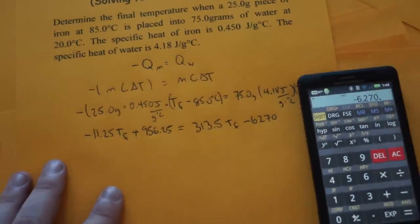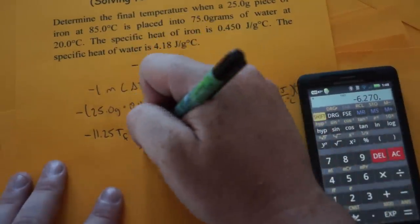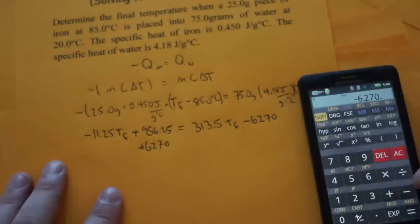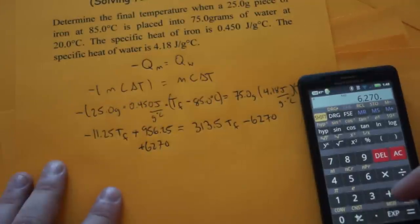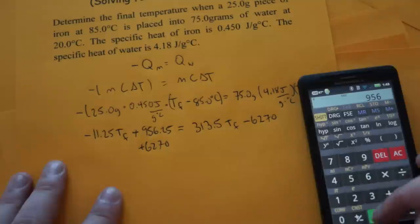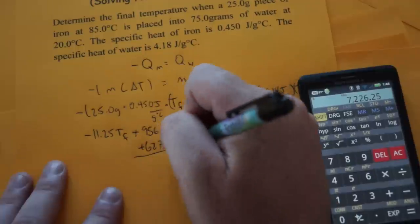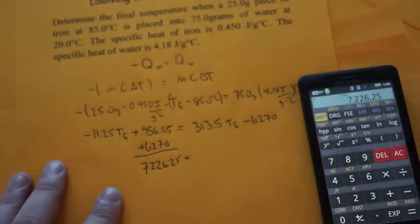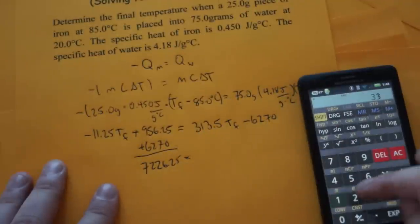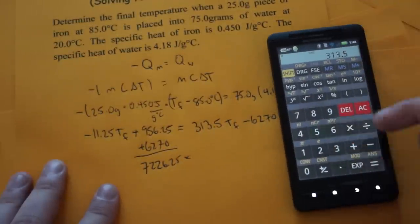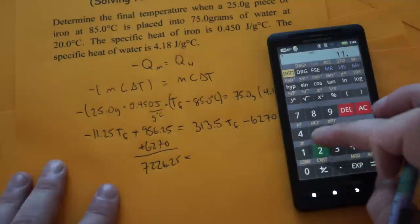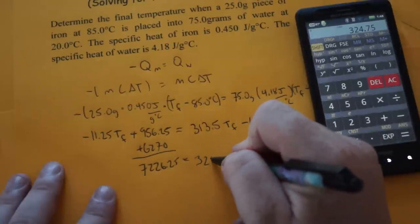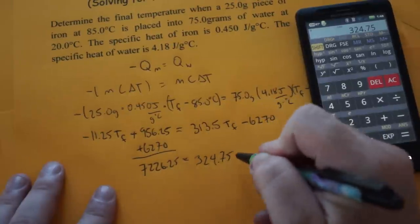So let's combine like terms. We're going to bring the negative over and make it a positive. 6,270 plus 956.25. So that's 7,226.25 and our Tf's, we got 313.5 and we're going to add 11.25. And you get 324.75 Tf.